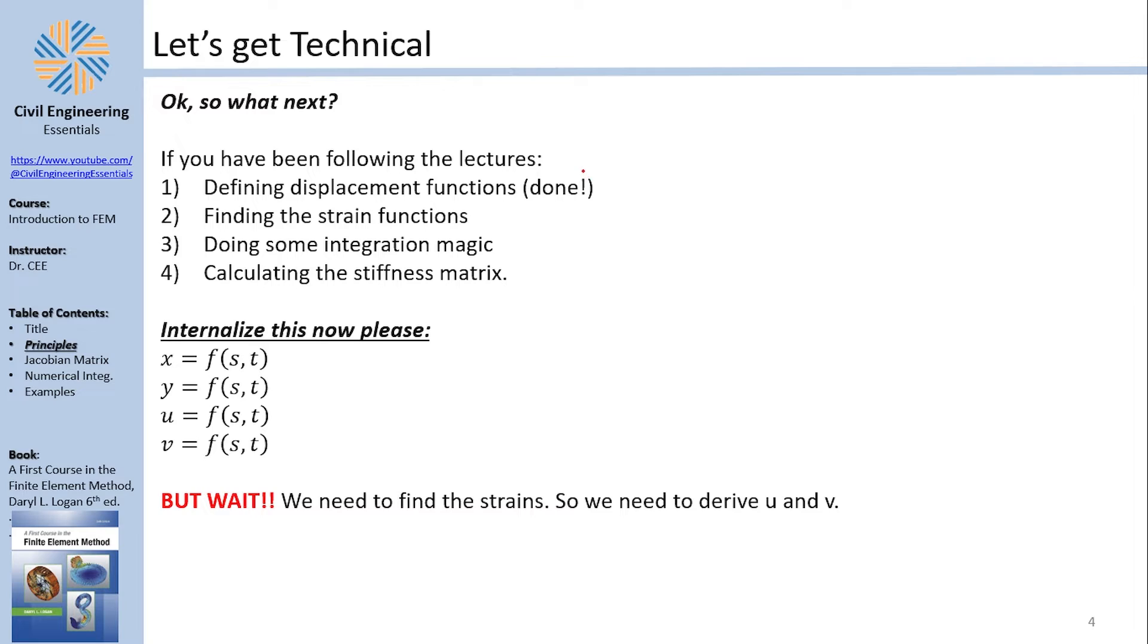What is next? So what's our objective? Our objective is to find the stiffness K. Now, to find the stiffness K, there are a lot of steps to follow. And if you have been following those lectures, you know that one of the steps is to find the strains. Our mission objective, if you choose to accept it, is to calculate the stiffness matrix. And how do we do that? Well, there is some integration magic that is going to happen. This needs us to find the strains for integration, which needs us to find or define the displacement functions. Now, defining the displacement functions is done because I have u as a function of s and t. So there's a problem now.